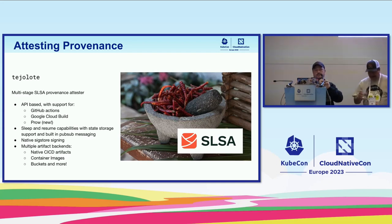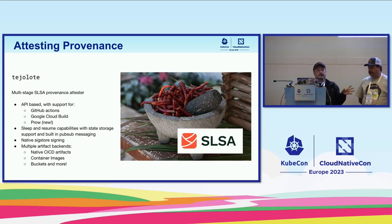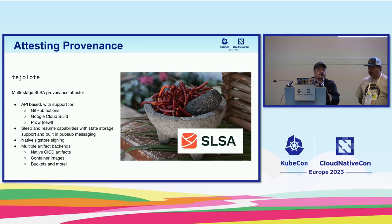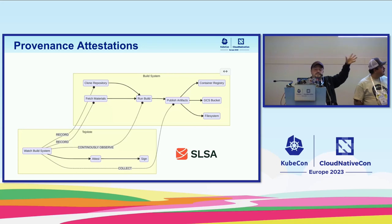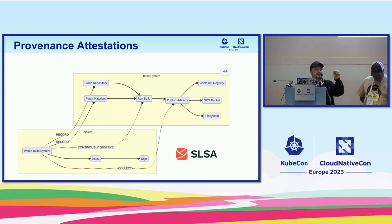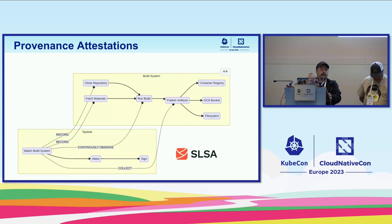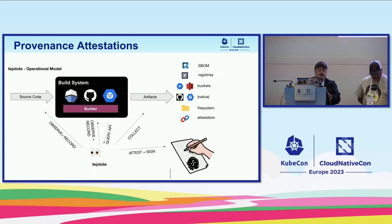The way Tejolote works is it observes two things: your build system as it runs, and then you tell it where to expect the artifacts. The build system outputs those artifacts and Tejolote records whatever it outputs. We are about to start replacing the current SLSA attestation generation inside of krel with this externally-running system. The reason is you should never try to generate provenance inside your builder, because you should treat it as an untrusted piece of software.